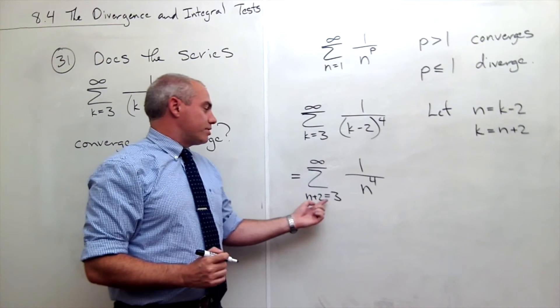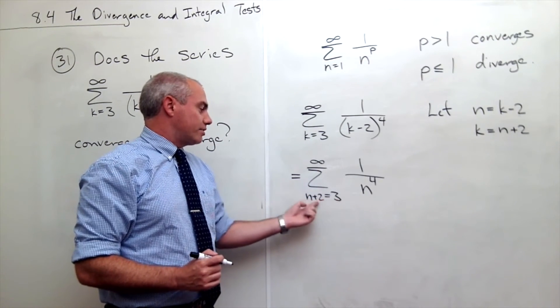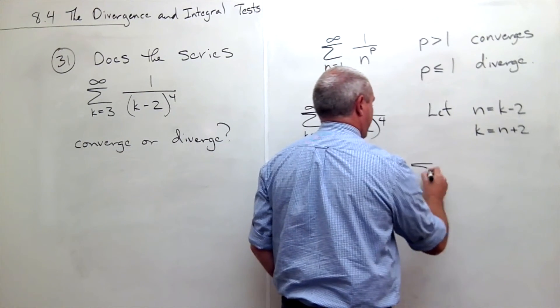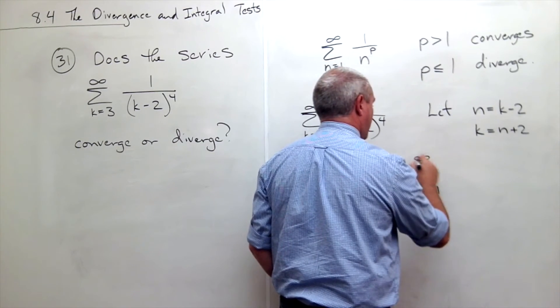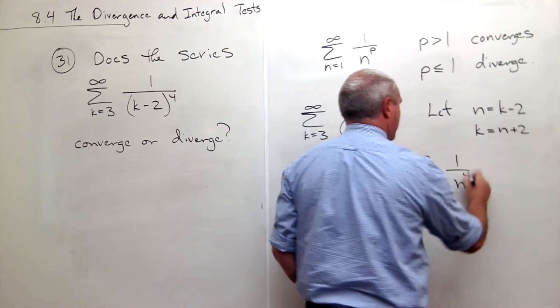But if n plus 2 goes from 3 to infinity, that means that n, I could subtract 2 from both sides. This says I've got the sum n going from 1 to infinity of 1 over n to the 4th.